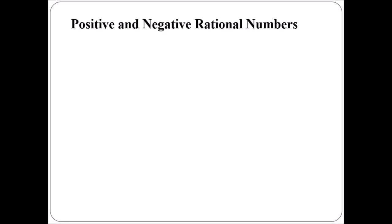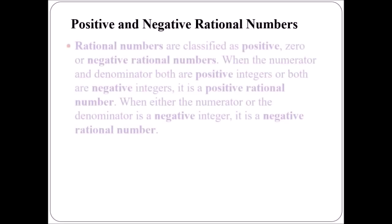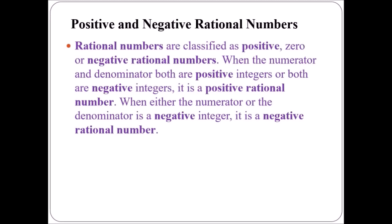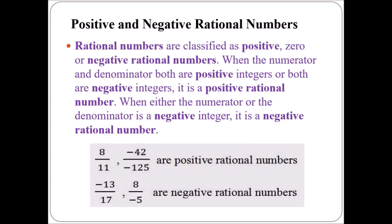Now we move on to the next section: positive and negative rational numbers. Rational numbers are classified as positive, zero, or negative rational numbers. When the numerator and denominator are both positive integers, or both negative, it is a positive rational number. When either the numerator or the denominator is a negative integer, it is a negative rational number. For example, 8 upon 11 and minus 42 upon minus 125 are positive rational numbers.